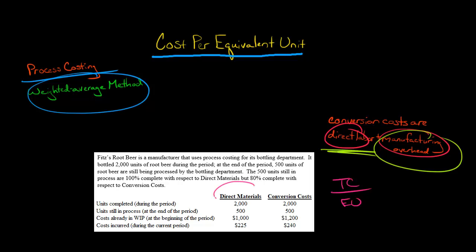For direct materials, let's start with that. We're going to add $1,000 plus $225. There were costs already in work in process at the beginning of the period—that's the $1,000. And then there were costs incurred during the period—that was $225.